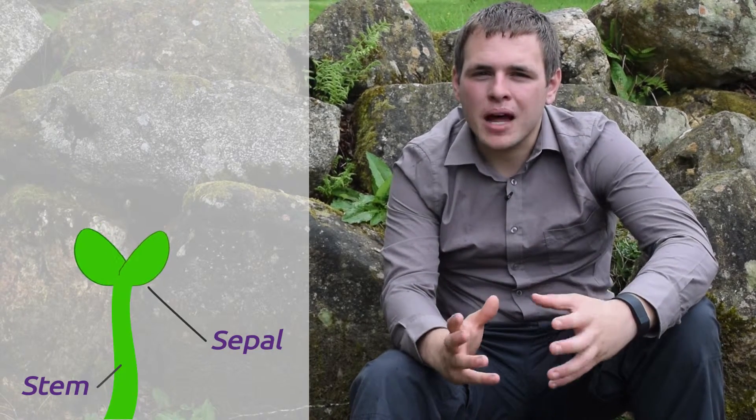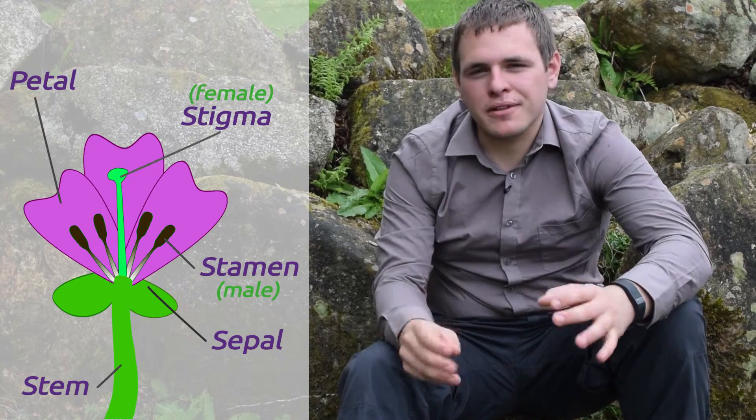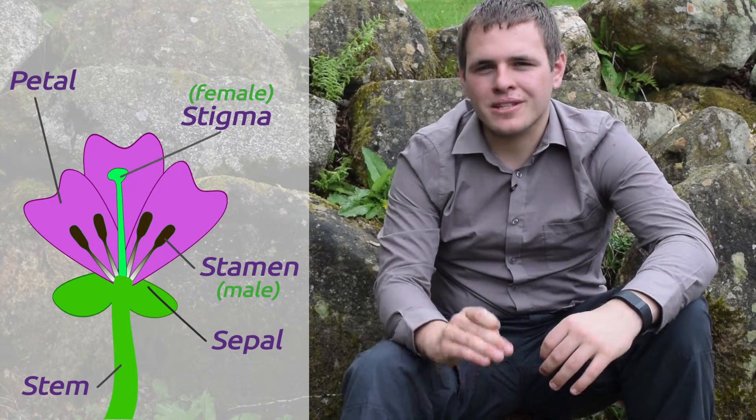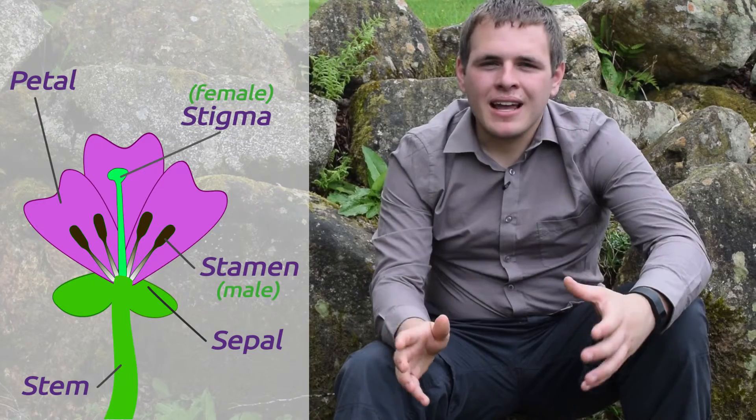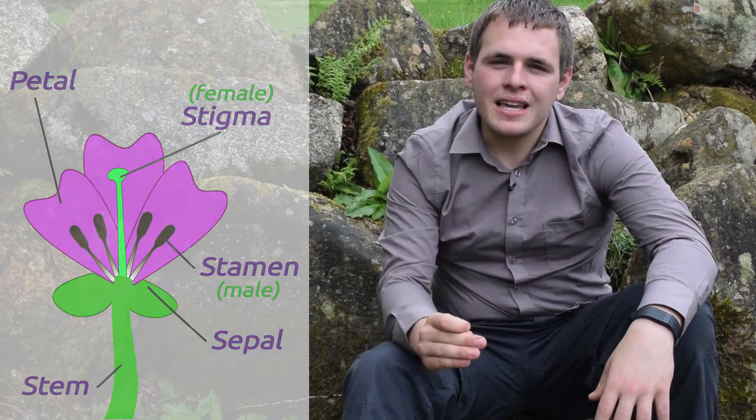This is a classic biological diagram that you might see. Underneath you've got the sepals, which initially cover and protect the bud, but which open out when the petals open out. Inside you've got the stamen and the stigma, which are both the male and female reproductive organs of the plant. The stamen produces pollen and the stigma is the female part from which the seed grows.